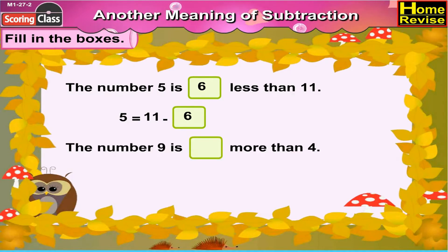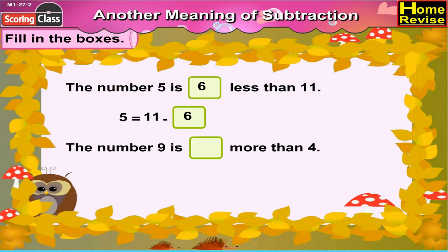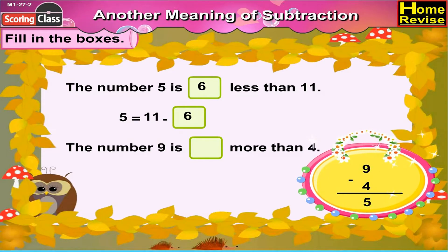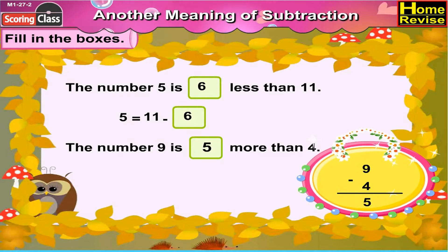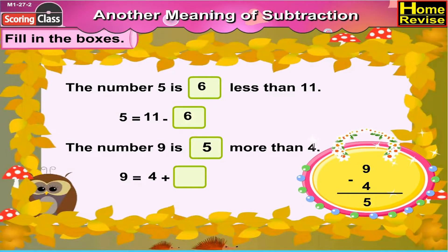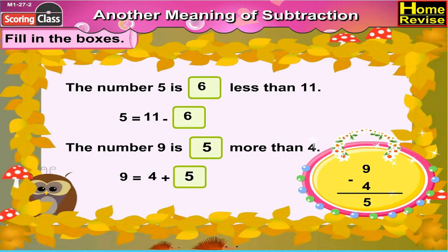The number 9 is blank more than 4. Is 9 bigger or smaller than 4? Yes, it is bigger. But by how many? You are right, by 5. So the number 9 is 5 more than 4. Which means, 9 is equal to 4 plus how many? Correct. 9 is equal to 4 plus 5.